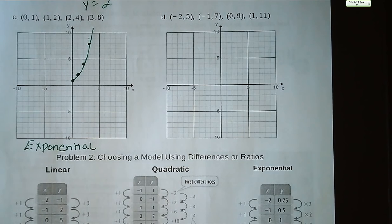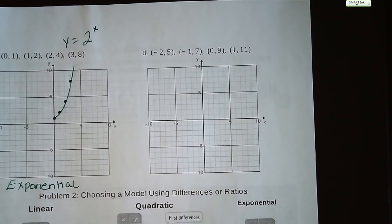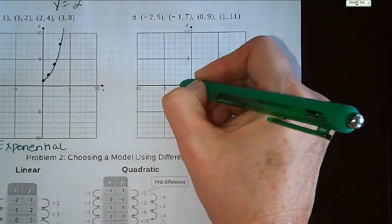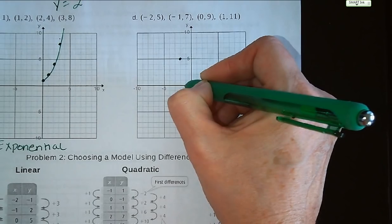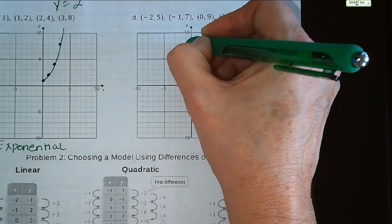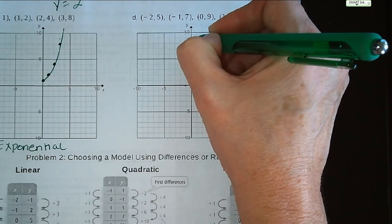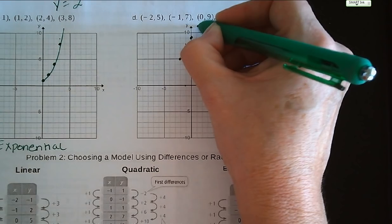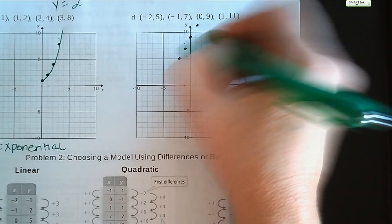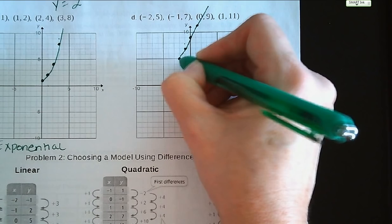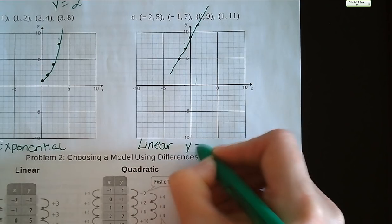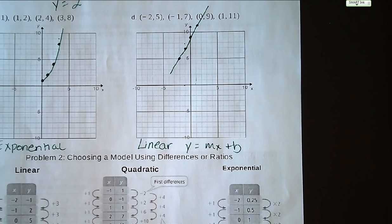Okay. All right. Now, letter D. We have (-2, 5), (-1, 7), (0, 9), and (1, 11). And this is why we use a ruler to draw straight lines. That's going to be y = mx + b. It'll be y = 2x + 9, I believe, is the equation.